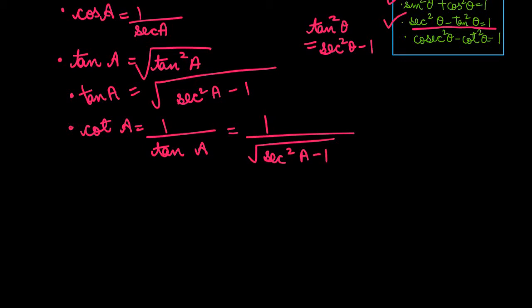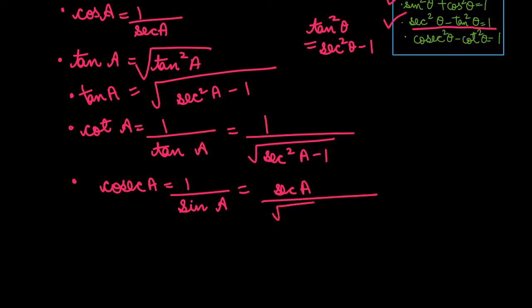Next we find cosec A. Cosec A = 1/sin A. Since sin A = √(sec²A − 1) / sec A, we get cosec A = sec A / √(sec²A − 1).